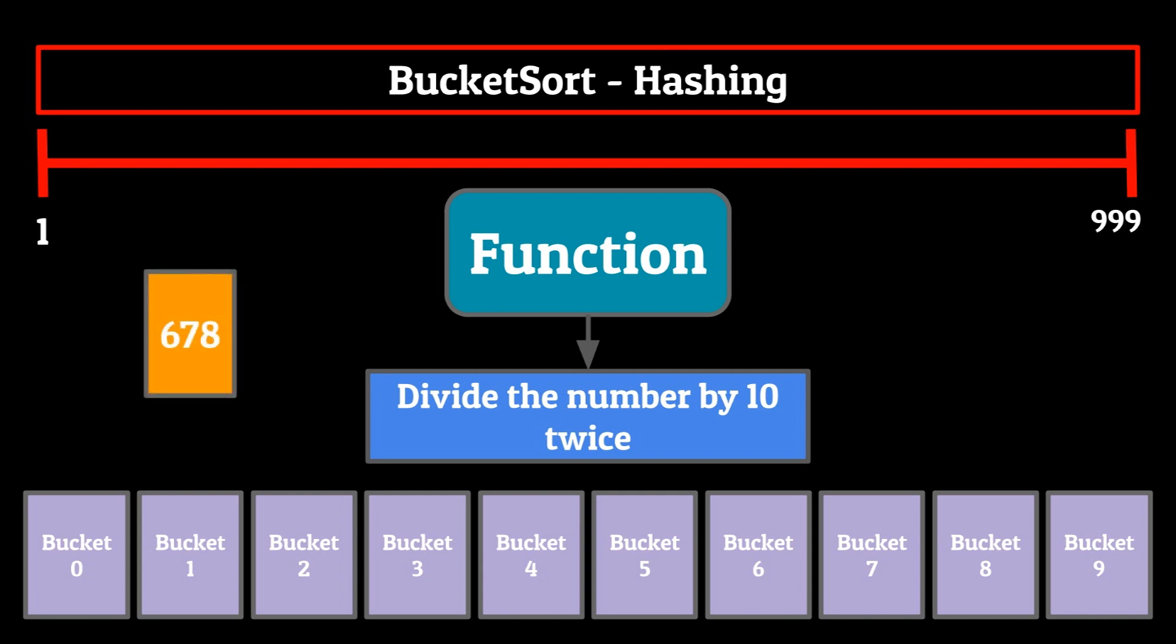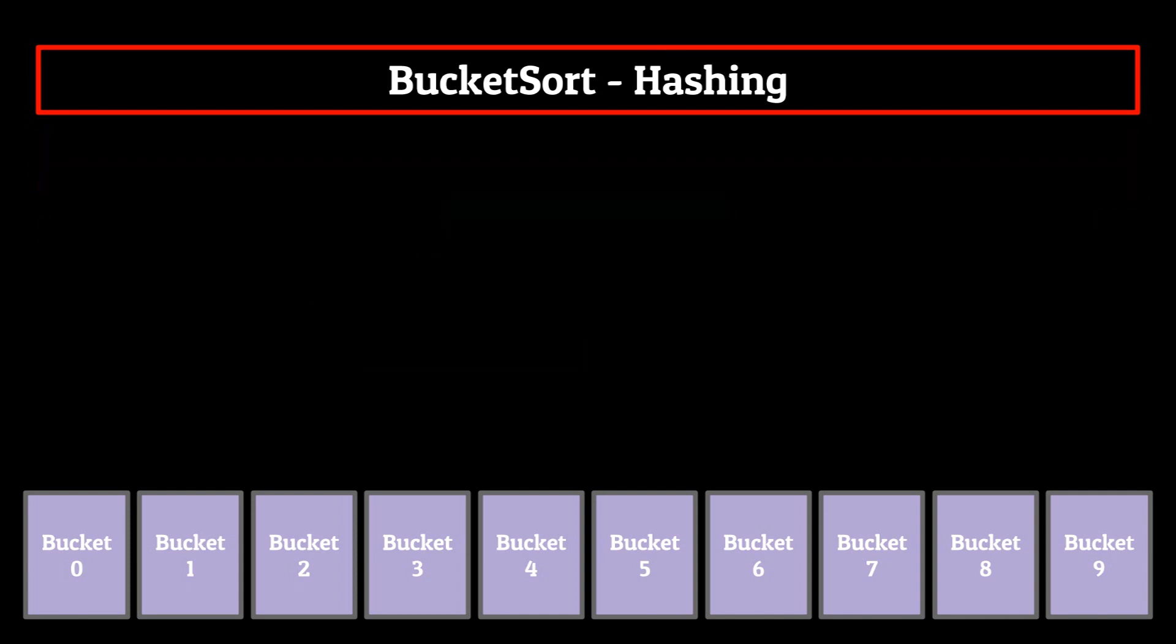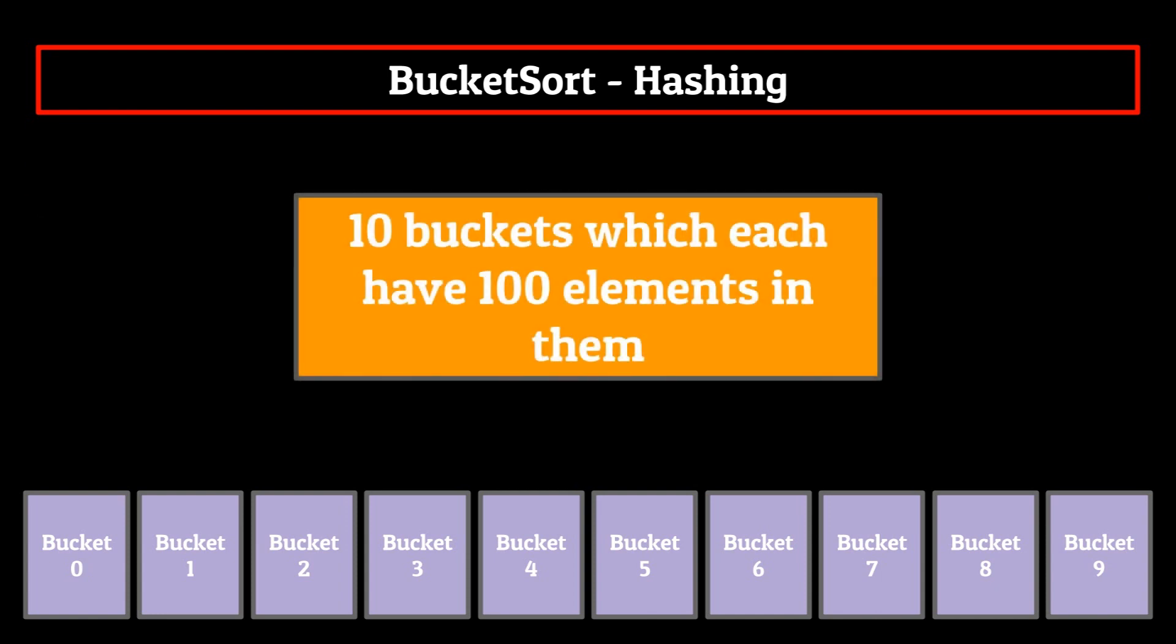One solution is to divide the number by 10 two times. Essentially, what this does for us is gives us the leading digit of any particular number. For a number like 678, we take 678 and divide it by 10. This would leave us with 67. We then do this again, and what we're left with is six, which is a single digit. And so the integer 678 would go in the sixth bucket.